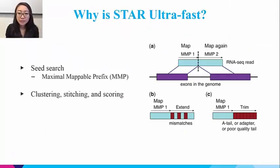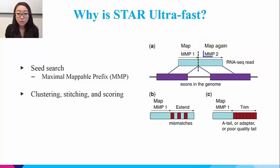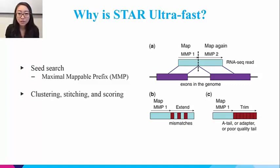Why is STAR so fast? The secret lies in STAR's two-step algorithm. The in-depth description of the algorithm is beyond the scope of this lecture — you can find these details in their paper. Briefly, given a read sequence, STAR will perform a sequential search for the longest substring on this sequence that matches exactly one or more substrings of the reference genome. In the example on the right, this corresponds to MMP1, which is the longest substring that can be mapped to a donor exon. Next, STAR will repeat this search strategy with the rest of the read MMP2, and look for the acceptor splice site. This will dramatically reduce the computation of finding all possible maximum exact matches and avoid any arbitrary splitting of the read sequences.